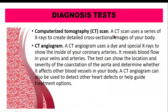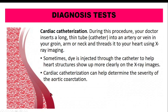MRI helps identify the location, severity, and damage to blood vessels or associated heart defects. CT scan also aids diagnosis. CT angiogram uses a radio-opaque dye to show the location and severity of coarctation and whether other blood vessels are affected. Cardiac catheterization can also be used with radio-opaque dye, threading a catheter via the femoral route, arm, or neck while using X-ray imaging.